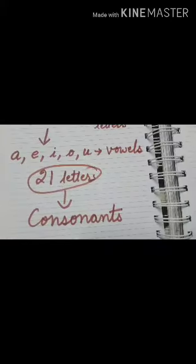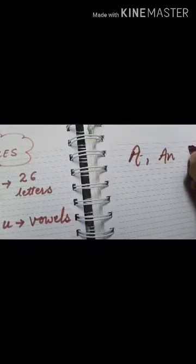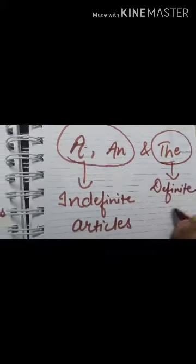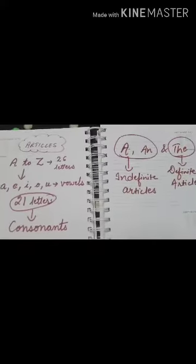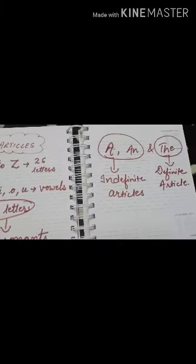Clear — there are 26 letters; out of that, five are vowels and 21 letters are consonants. So now I'm going to tell you about articles. We are having 'a', 'an', and 'the'. There are three articles. 'A' and 'an' are our indefinite articles, and 'the' is our definite article. Now I'm going to show you with the help of pictures and examples where we use 'a', 'an', and 'the'.